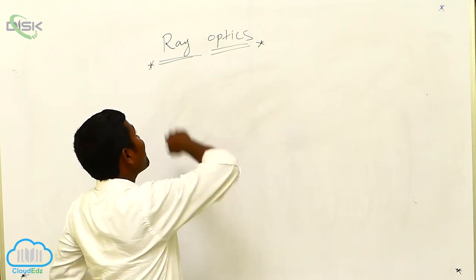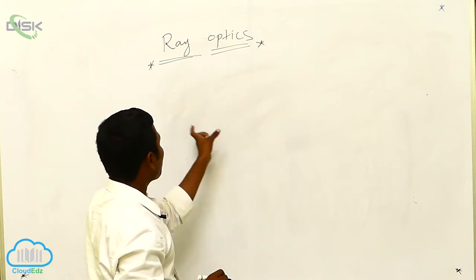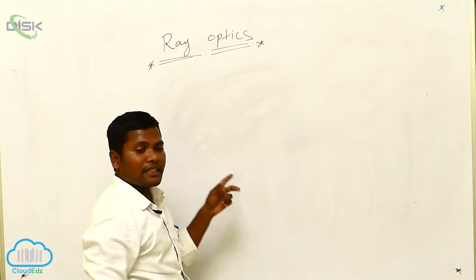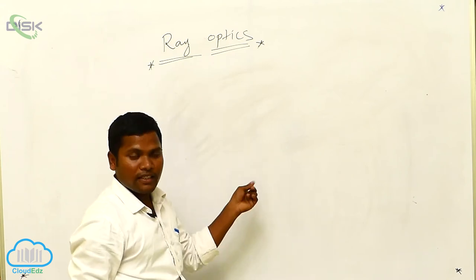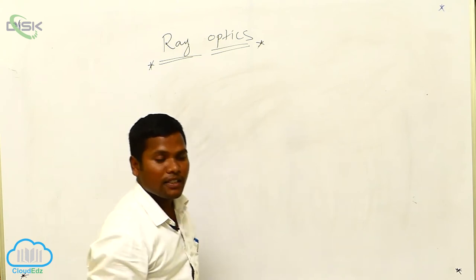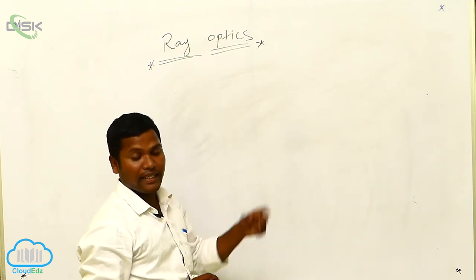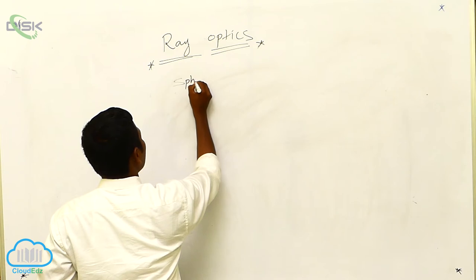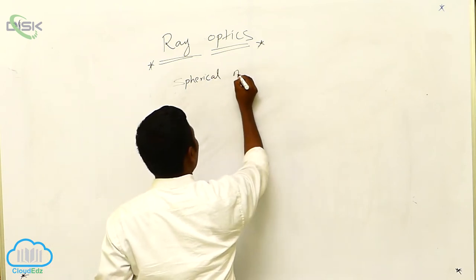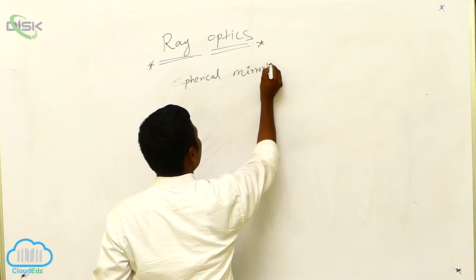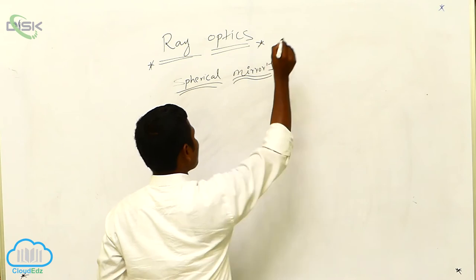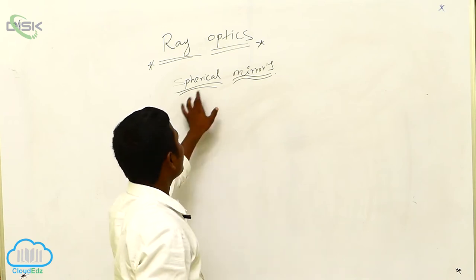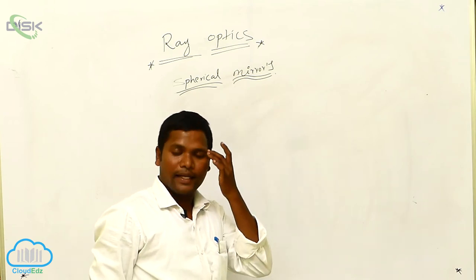Now we will move on. Till now we discussed about plane mirror rays. Now we are going to discuss the same rays in the spherical mirrors. Previously I discussed only the plane mirror. Now I am going to discuss how rays travel in spherical mirrors.